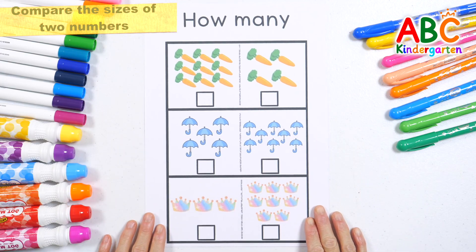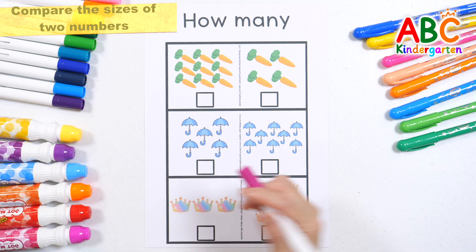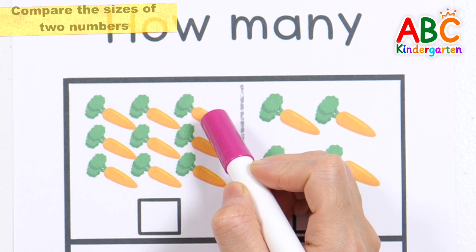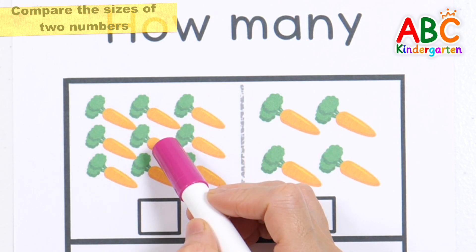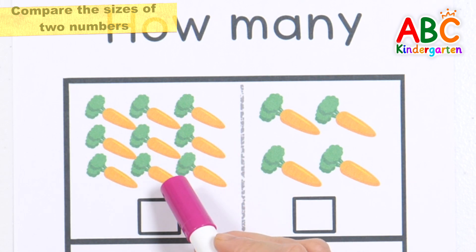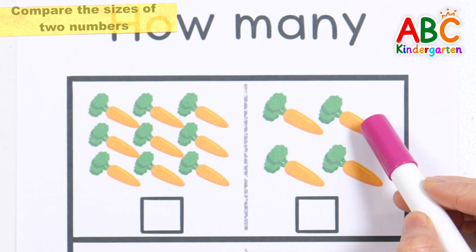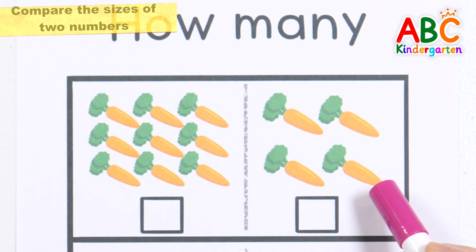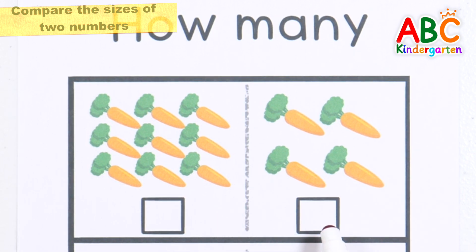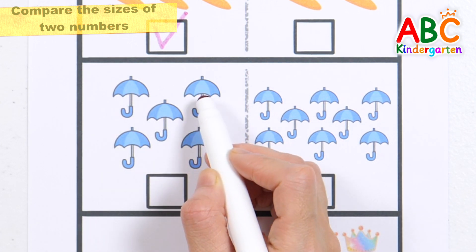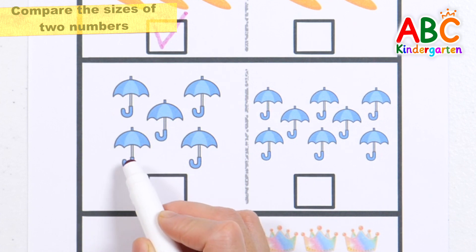Count the pictures and check whichever number is higher. How? Let's count carrots! One, two, three, four, five, six, seven, eight, nine. Nine carrots! One, two, three, four, five, six. Five umbrellas!